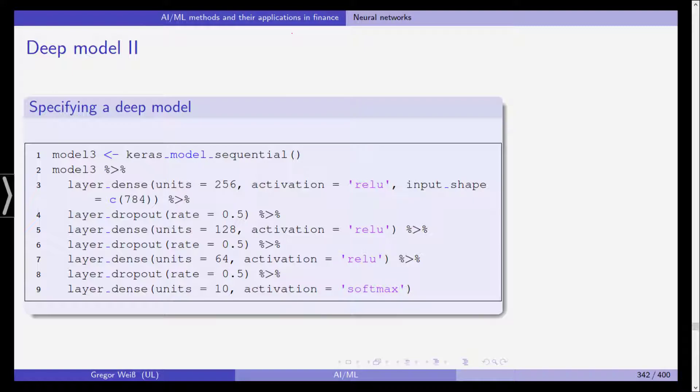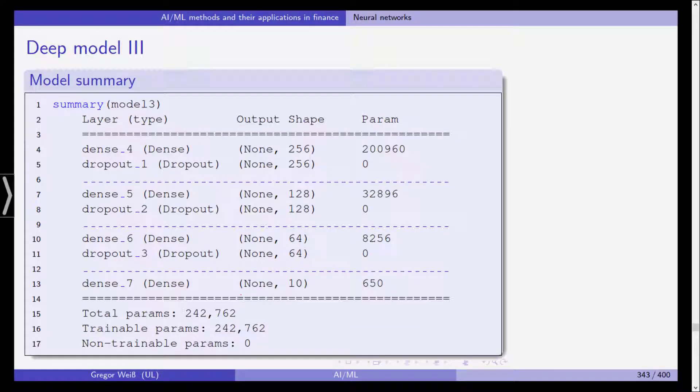It's model 3. Again, it's fitted sequentially and as you can see we have layer dense. We start with 256 neurons, the ReLU activation function. We use dropout, then we use 128, again dropout 64, and finally we have our output layer with 10 binary response variables and then we use the activation function softmax. This is the summary.